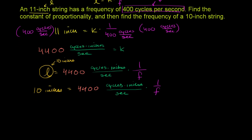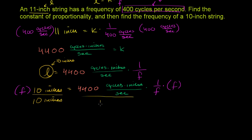We could multiply both sides of this equation by the frequency so that it gets out of the denominator. And then we could also divide both sides by 10 inches to get rid of this, and then we'll just have frequency on the left-hand side.